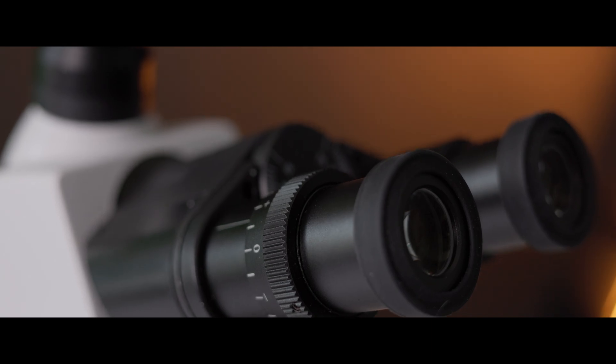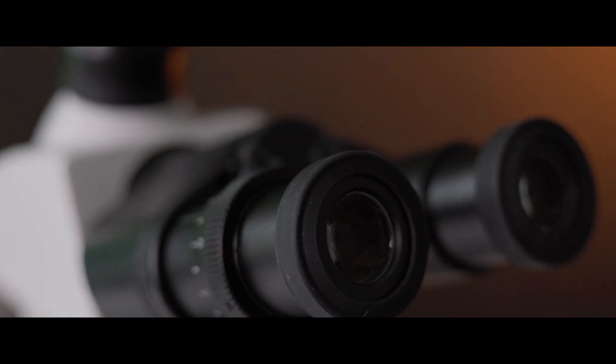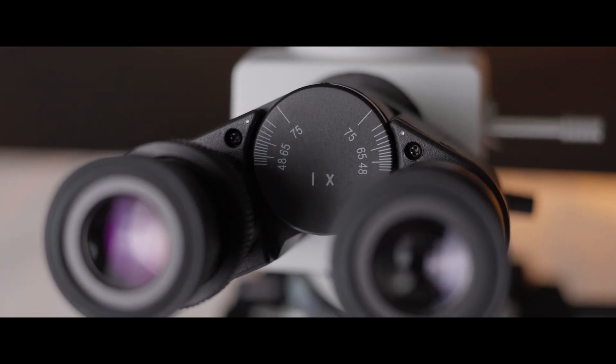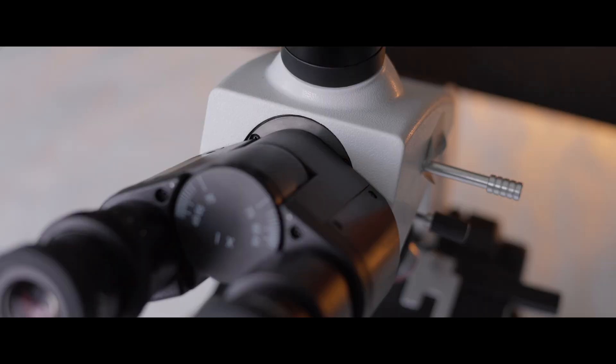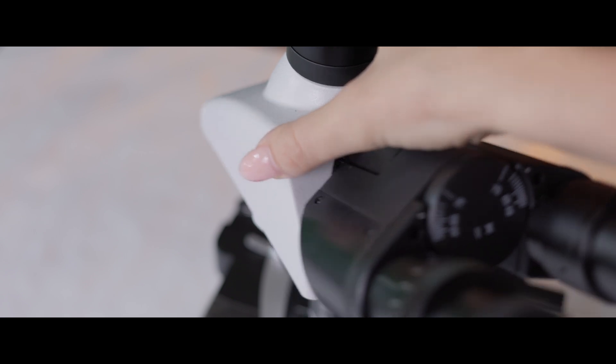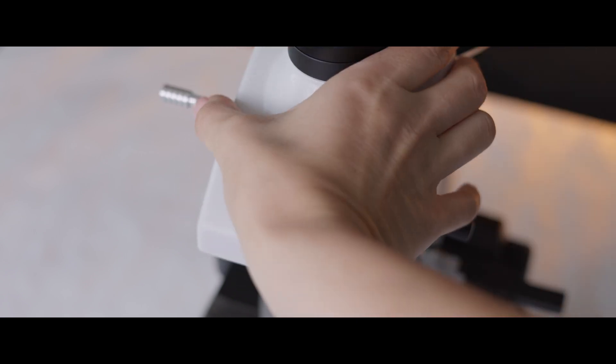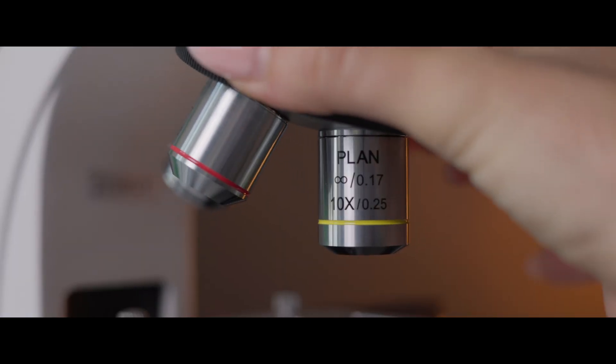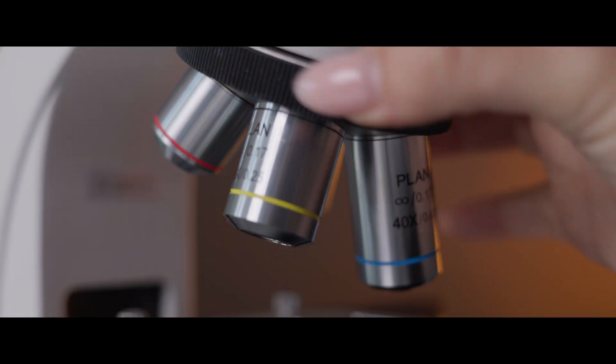If you're like me and you're going to spend hours at the microscope, comfort is key. The OM139 has a 45-degree inclined head that's also rotatable 360 degrees, so you can adjust it to any angle that works for you. I love how flexible it is, especially when I'm switching positions to get a better view. And with the reversed nose piece, changing slides is a breeze without feeling cramped.